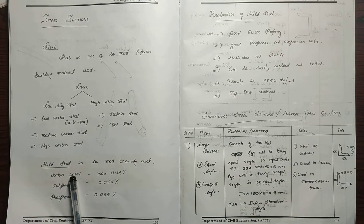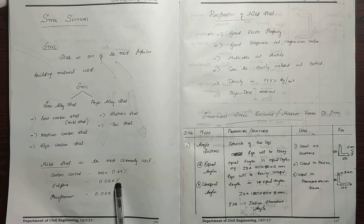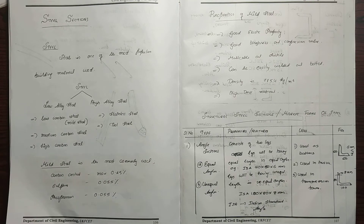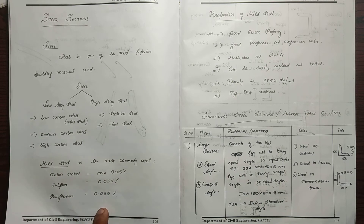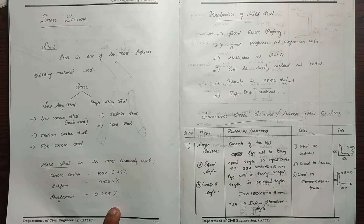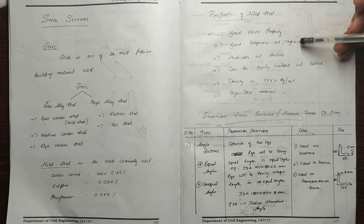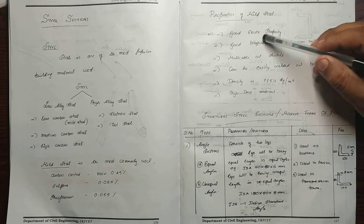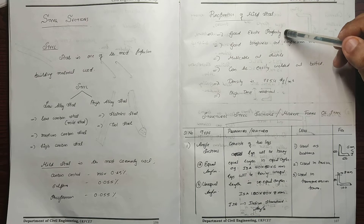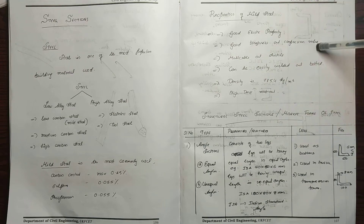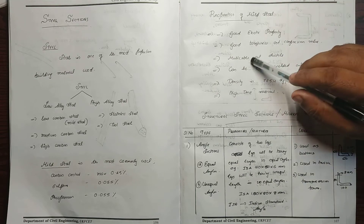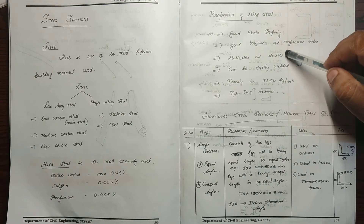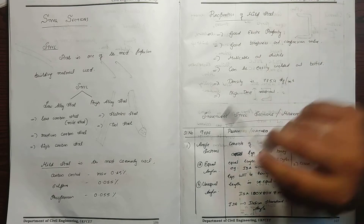Low carbon steel is called Mild steel, or MS. It is the most common type. The properties of Mild steel include: Good Elastic Property, high value, Good Toughness and Compression value. It is Malleable and Ductile — it can be drawn into wires and made into sheets.